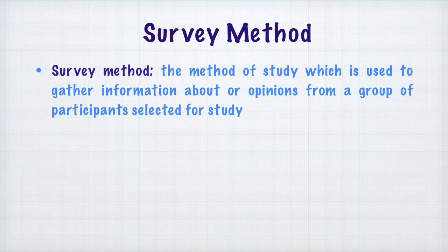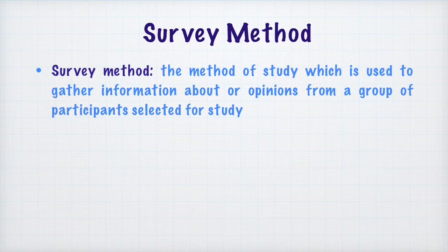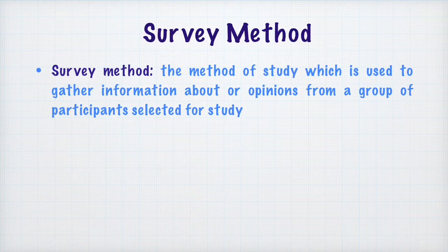Survey method is the method of study which is used to gather information about or opinions from a group of participants selected for study. So in survey method, looking at this definition clearly, the method is used to gather information or opinions about the people we have chosen to study, or their opinions about certain things.